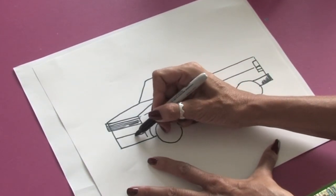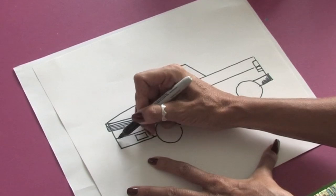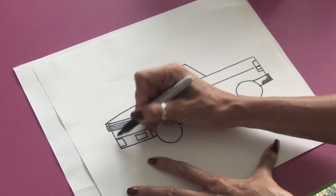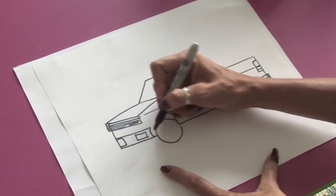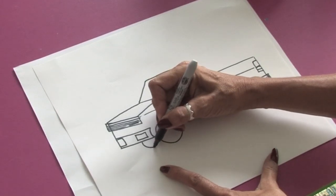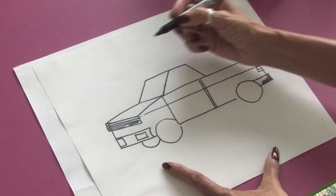We can just do some more rectangles to show the little lights on the bottom of the truck. And just another simple shape to show the back tire.